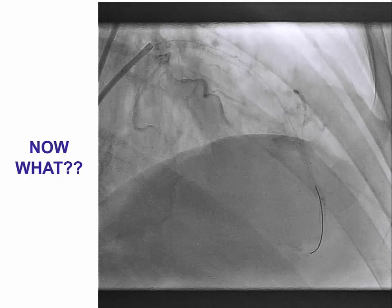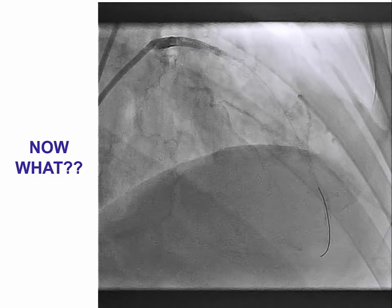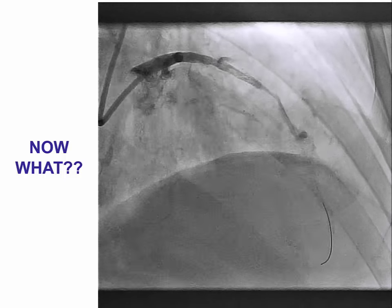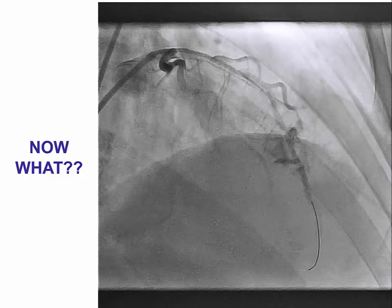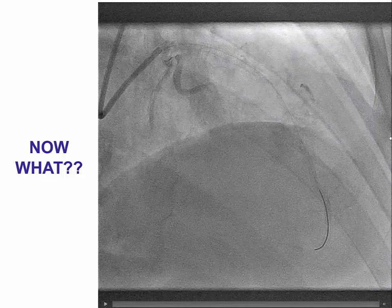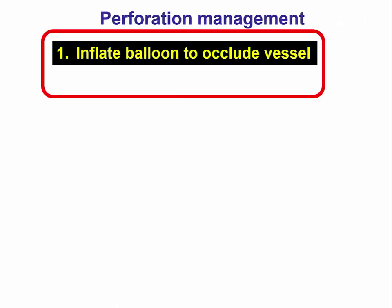The very first thing to do when you have a large vessel perforation—or any perforation—is to keep the wire position. Sometimes people get stressed out and the wire position can be lost, which is the worst thing that can happen. You want to keep the wire position and then inflate a balloon over that original wire to occlude the vessel. This buys you time by stopping extravasation into the pericardium, decreasing the likelihood of tamponade. In some cases, prolonged balloon inflation may be all you need to stop the bleeding.